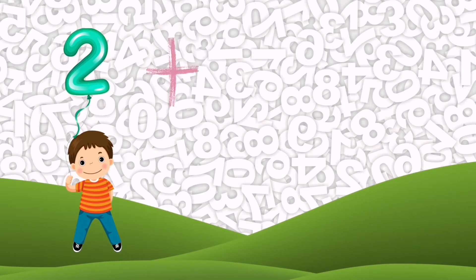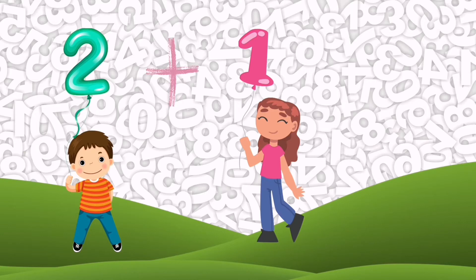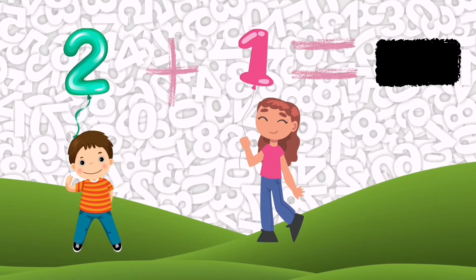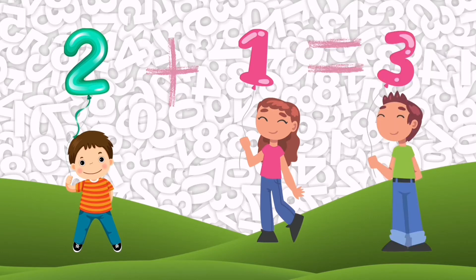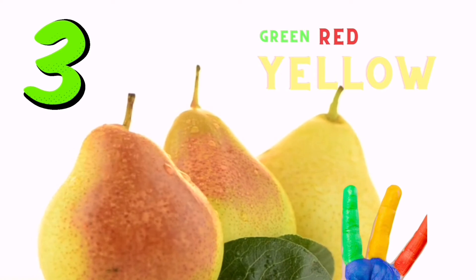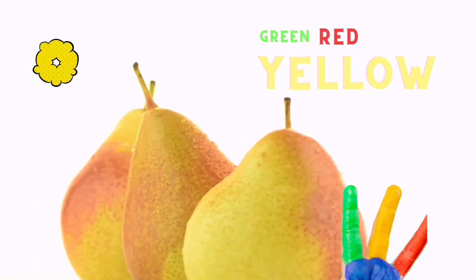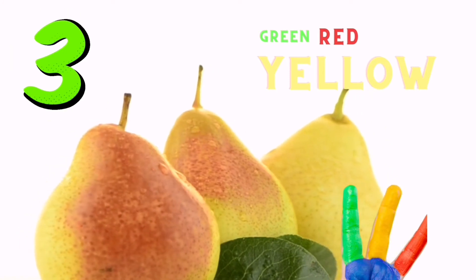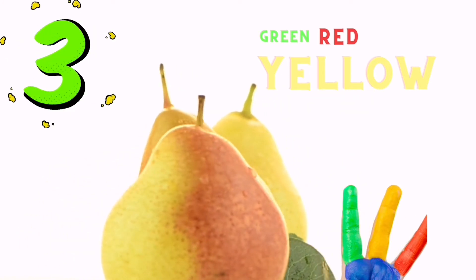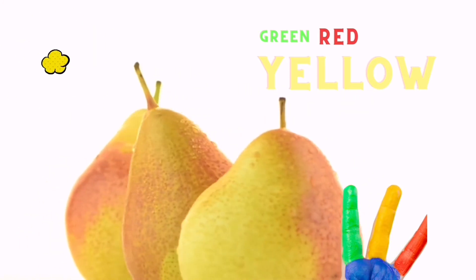2 plus 1 is equal to 3, yay, and 3 pears, 3 yellow, red, and a slightly green hint pears. Wow, 3, 3, 3.